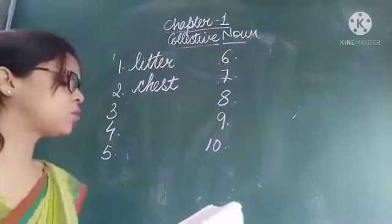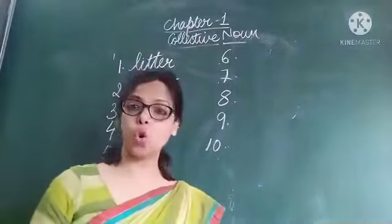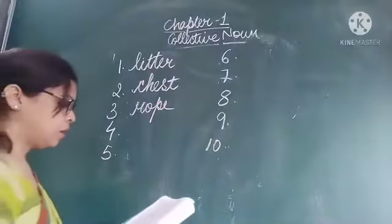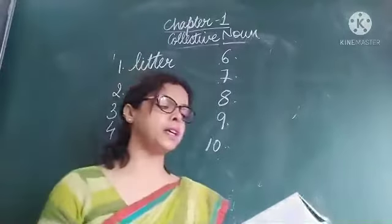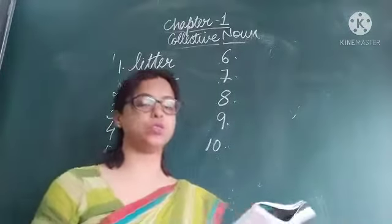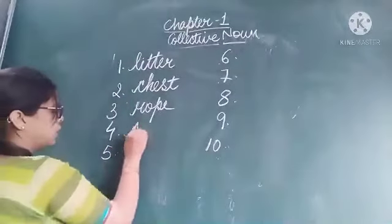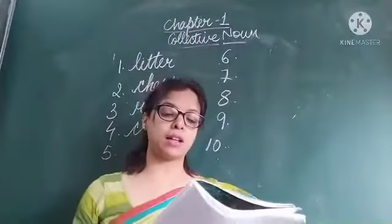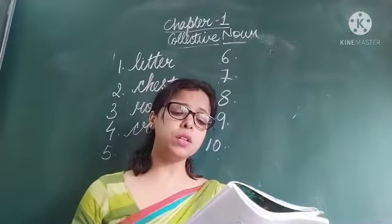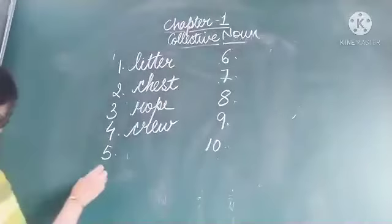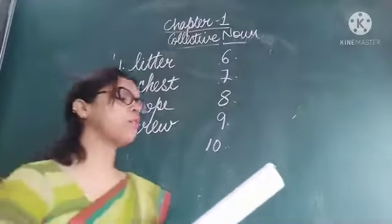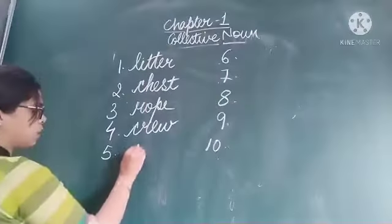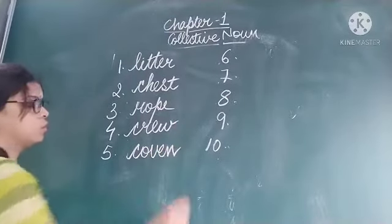Third: somebody has stolen the valuable rope of pearls. Fourth: the crew of the sinking ship managed to save all the passengers. Fifth: the coven of witches met at midnight in the wood.